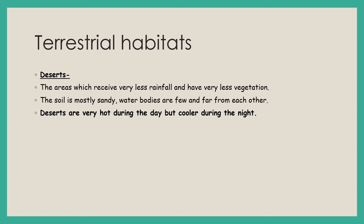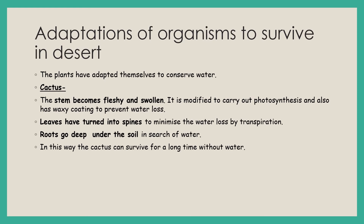Deserts are areas which receive very less rainfall and hence have very little vegetation. The soil in deserts is mostly sandy, so it's not very suitable for growing crops. Water bodies in deserts are very few in number, and if they are present they are very far from each other. One specific feature about deserts is that they are hot during the day but cooler during the night.